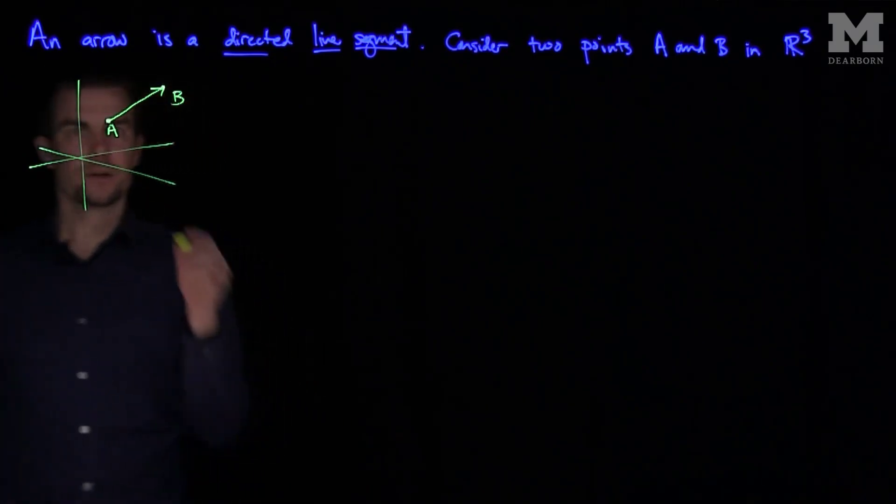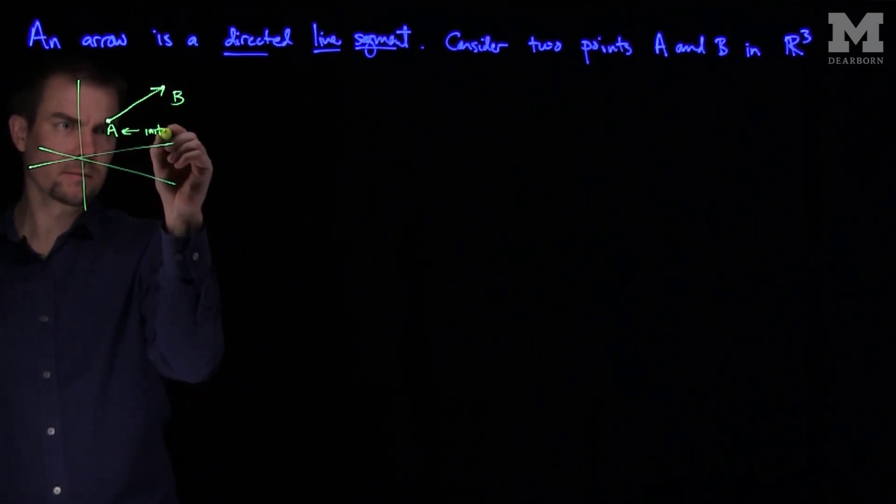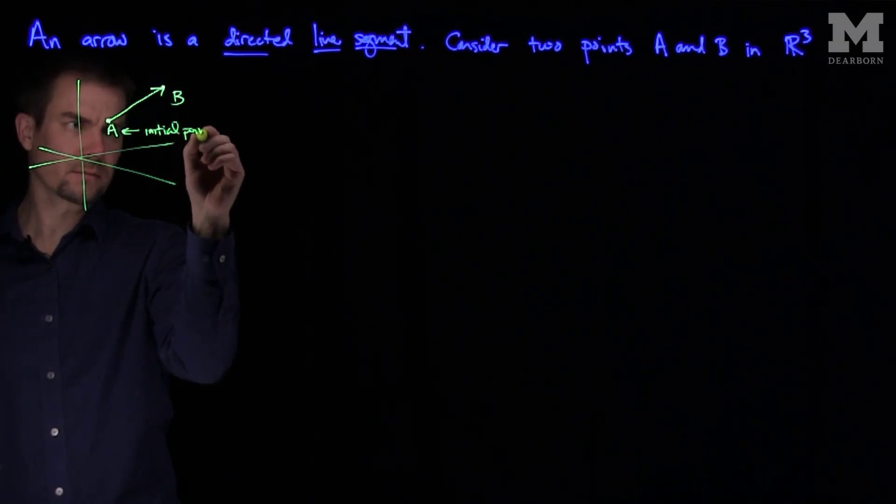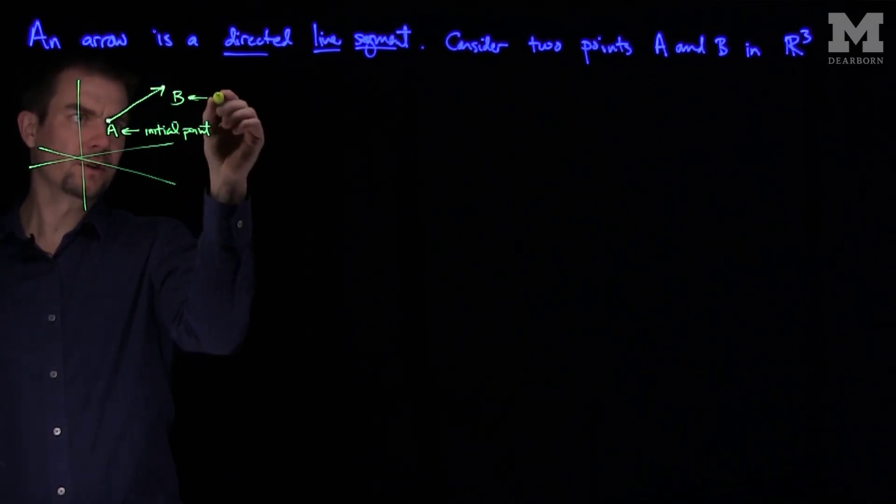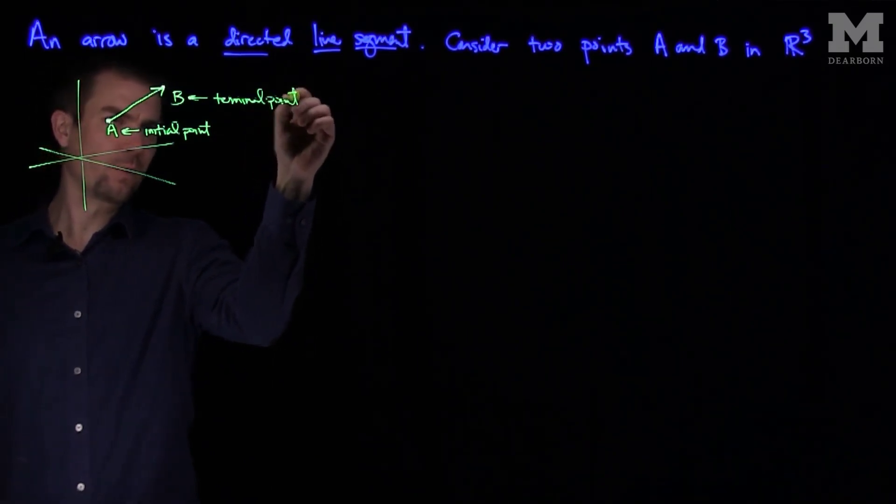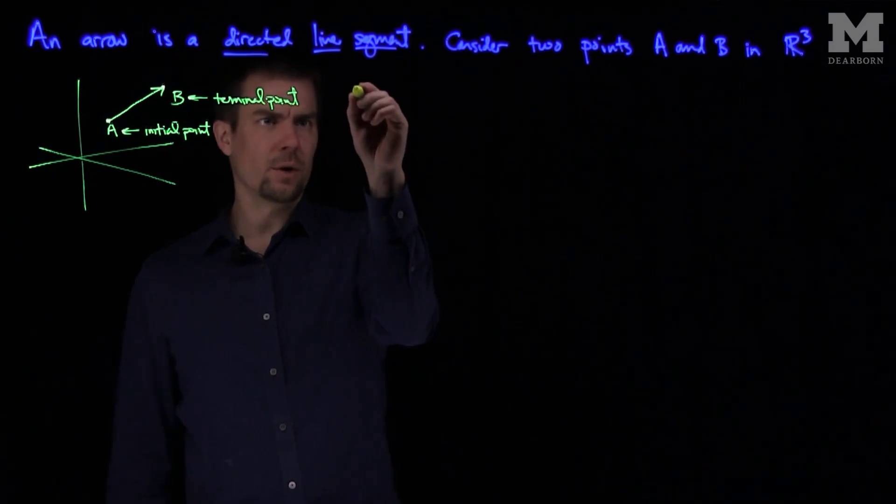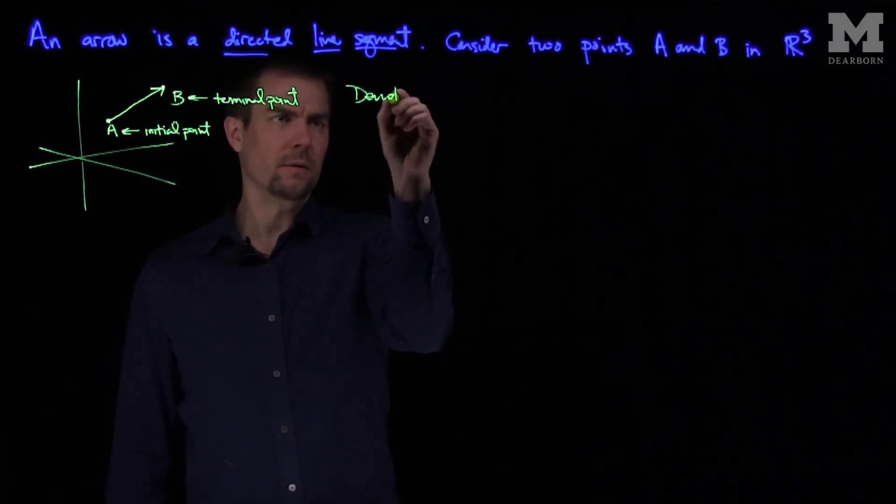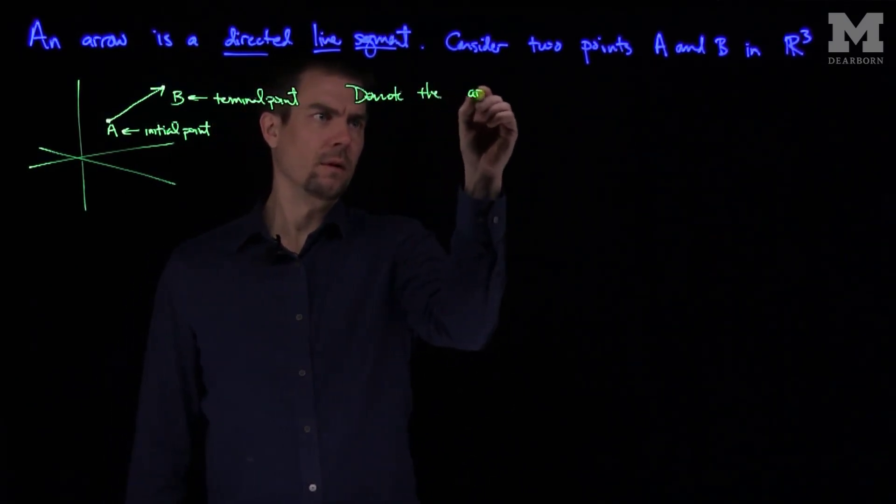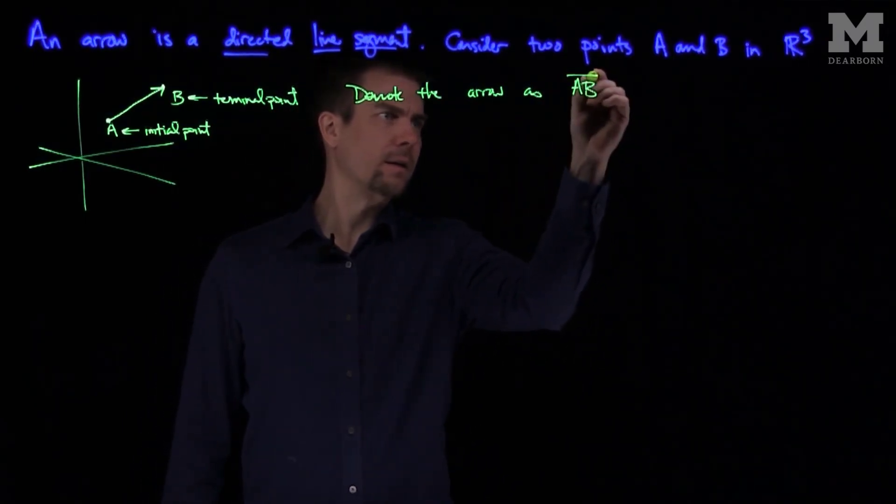So A is called the starting point, or the initial point. And B is called the terminal point. So we start at the initial point and go to the terminal point. And we'll denote the arrow as AB.